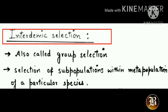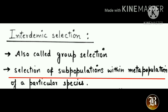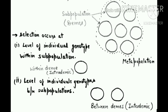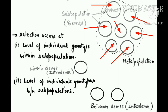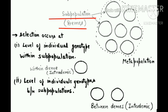The next type of selection is interdemic selection, also known as group selection — the selection of subpopulations or deems within the metapopulation of a particular species. A metapopulation is a patchy population. Here, a metapopulation is represented: the dotted lines mark its boundary, and the circles represent small habitable patches where individuals of a particular species reside. The area between the circles is inhabitable. All the circles represent subpopulations, called deems, and all subpopulations together make a metapopulation.